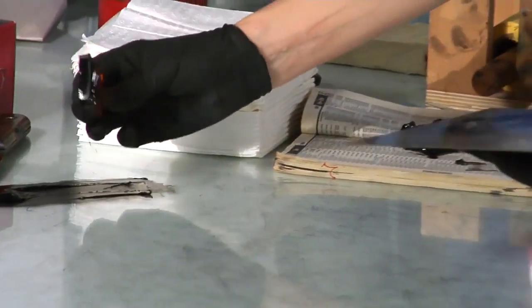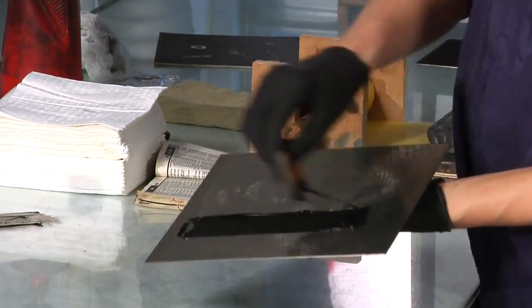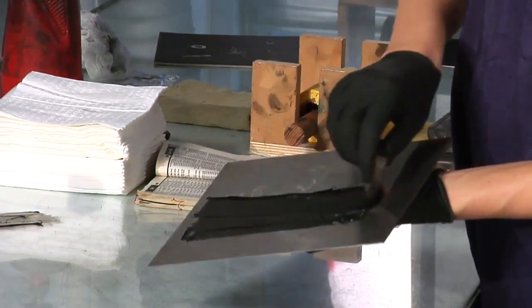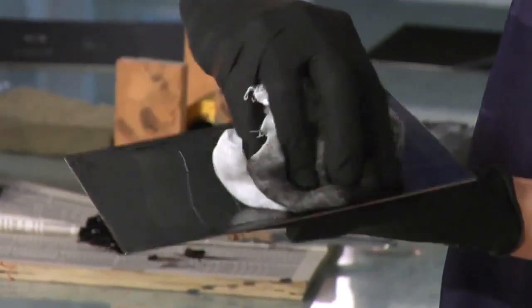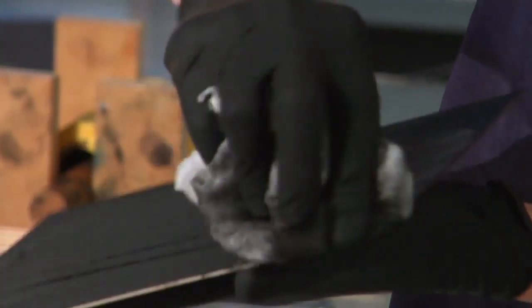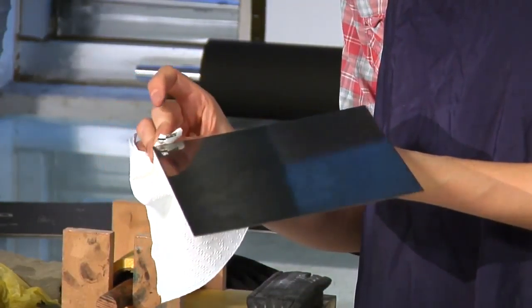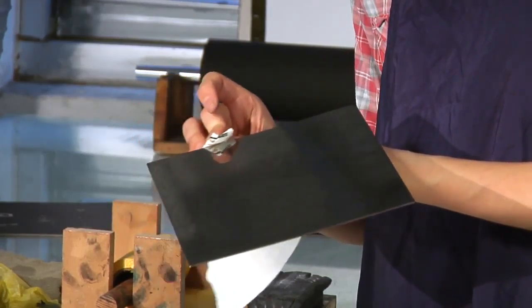All intaglio processes are printed in the same format. Printing involves wiping the plate with ink to force ink into the recesses of the plate, utilizing tarlatan to remove excess ink from the raised surface or upper surfaces of the plate, and finally, a small amount of hand wiping and cleaning of the edges so that all of the white areas of the plate remain white.